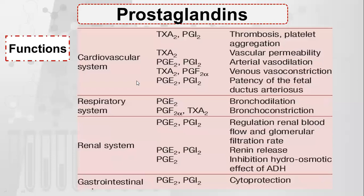What are the functions of prostaglandins? In the cardiovascular system, they mediate thrombosis, platelet aggregation, vascular permeability, arterial vasodilation, venous vasoconstriction, and patency of the fetal ductus arteriosus — meaning they prevent auto-closure of the fetal ductus. In the respiratory system, they cause bronchodilation. In the renal system, they regulate renal blood flow, glomerular filtration rate, renin release, and inhibition of the hydroosmotic effect of antidiuretic hormone.